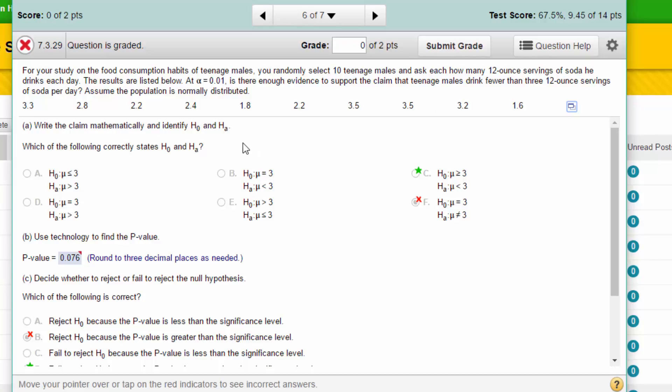First of all, we've got to identify the null and the alternative. We can go back to this problem statement. The claim is males drink fewer than three. Fewer than three is a less than problem, it's a left tail problem, and because it's an inequality, that means the claim, this less than three, must be the alternative. So if we look down here, we've got the less than three for the alternative, which is correct.